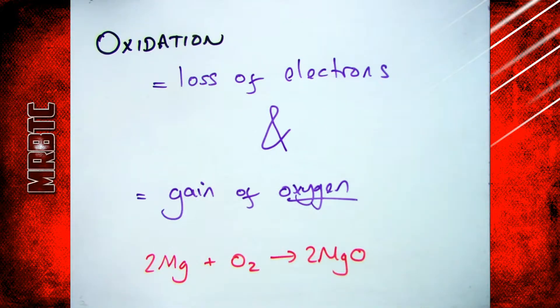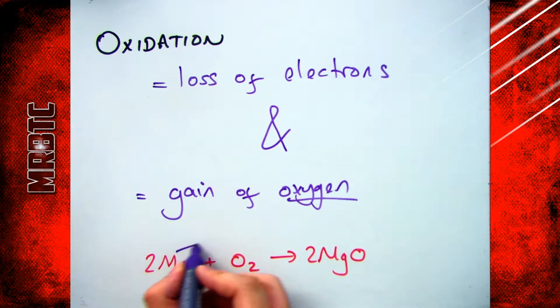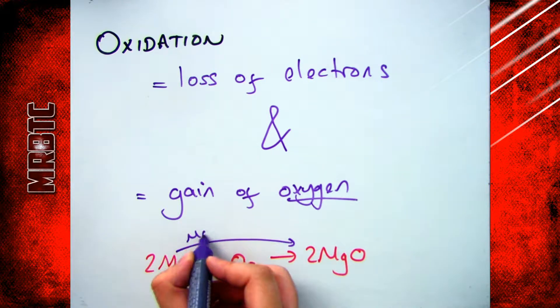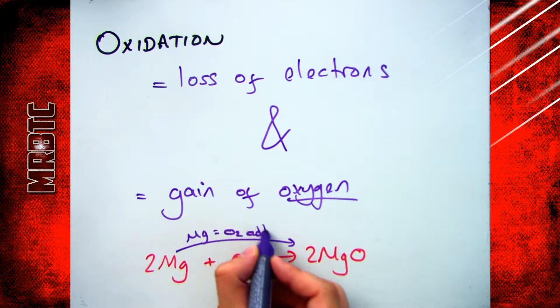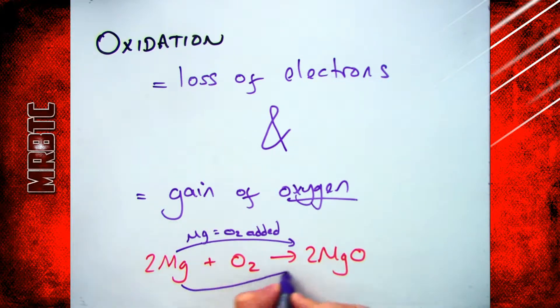So if we have a look at the example here, we've got magnesium reacts with oxygen to make magnesium oxide. Magnesium has had oxygen added to it, so we've started off with Mg, we've ended up with MgO, oxygen has been added, therefore magnesium has been oxidized.